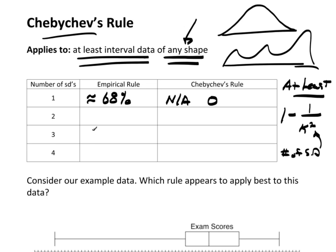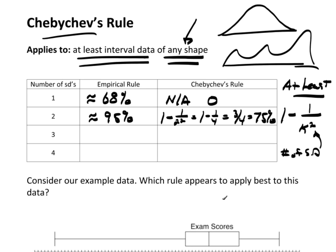The empirical rule says at two standard deviations from the mean, approximately 95% of the data. Chebyshev's rule says at least one minus one over two squared, which is one minus one-fourth, which is three-fourths — that's 75% of the data. This is at least 75%, so these actually agree with each other. Empirical rule says approximately 95%; Chebyshev's says 75% or more. They do not disagree.